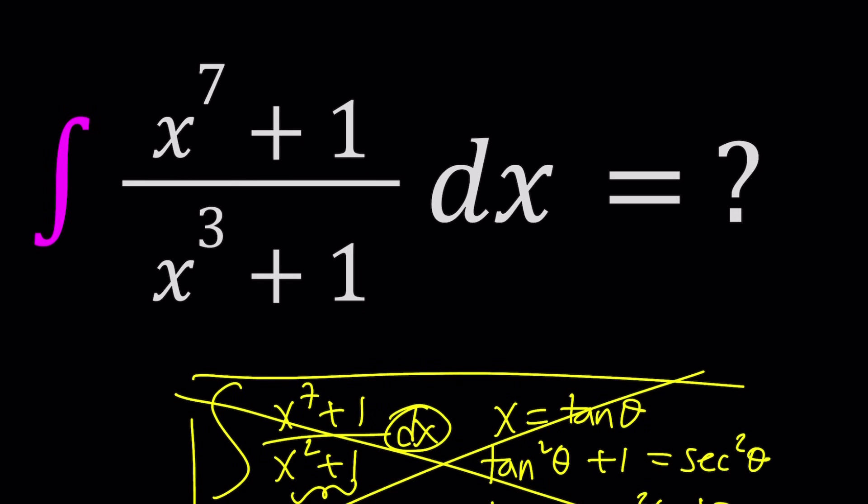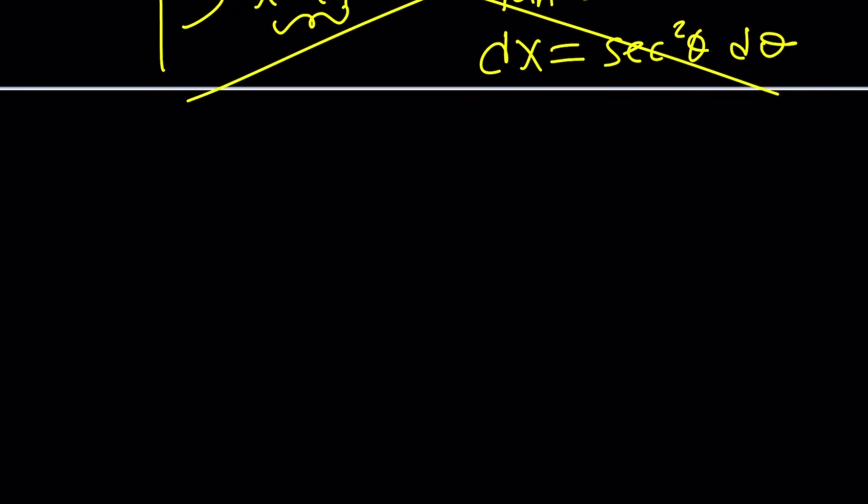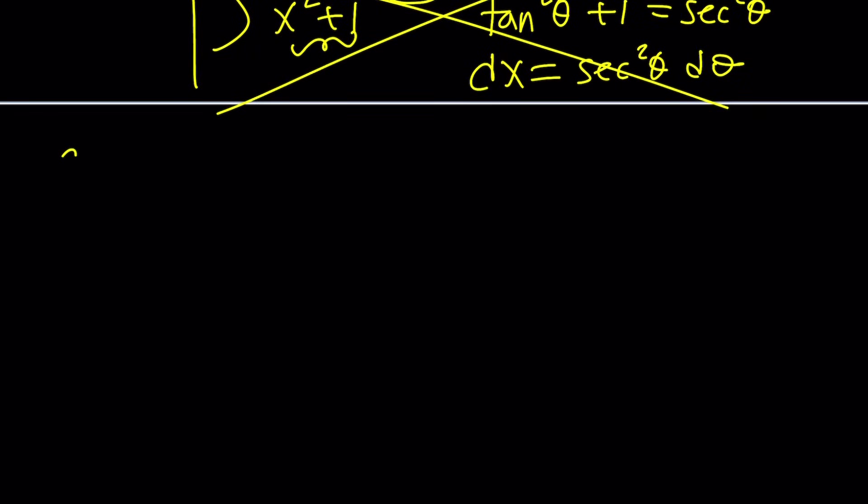But here's what I'm going to do. Instead of doing the long division, I'm going to manipulate the numerator so that it's easily divisible by the denominator. Does that make sense at all? Okay, let me show you what I'm talking about. So we'll start with this. x to the seventh plus one divided by x cubed plus one dx.